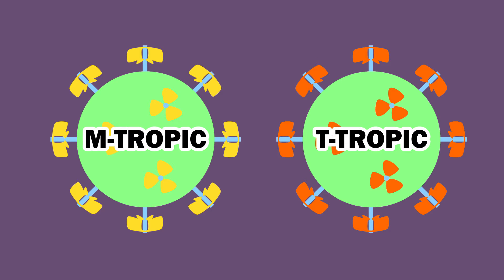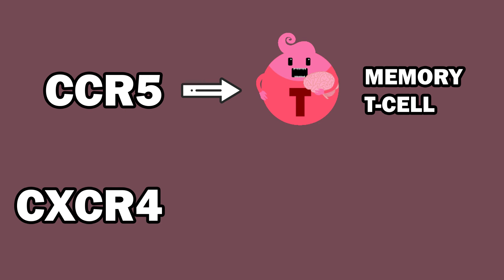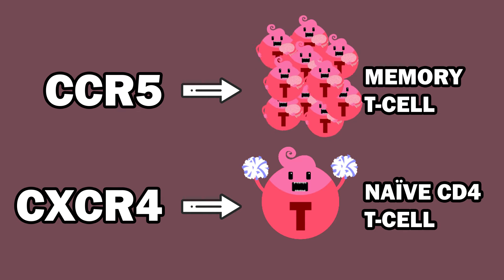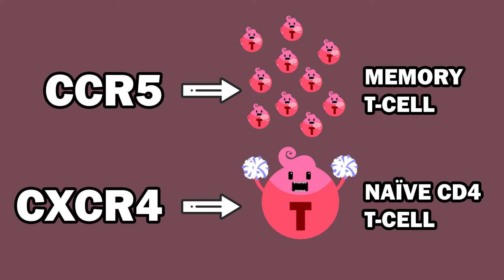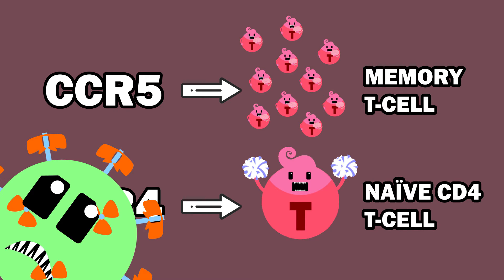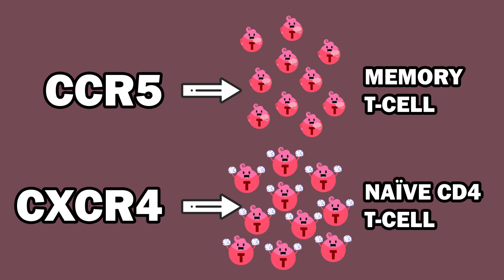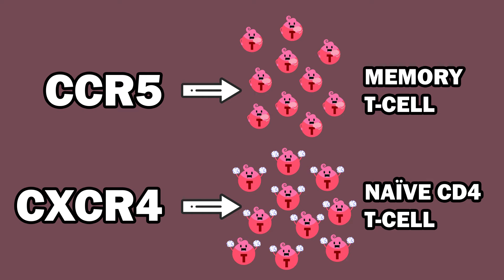M-tropic and T-tropic strains can coexist in the body. There is also another reason why HIV might start off as M-tropic and eventually develop into a T-tropic strain. CCR5 is generally expressed by memory T-cells, while CXCR4 is expressed by naive CD4 T-cells. Normally, memory cells divide about 10 times faster than naive CD4 T-cells, so T-tropic virus would be disadvantaged during early infection. However, as the disease progresses, naive cell division becomes as frequent as that of memory cells — that is when there tends to be a shift in tropism.